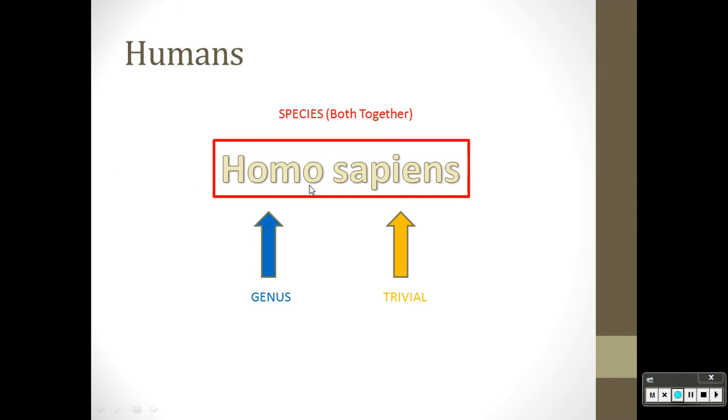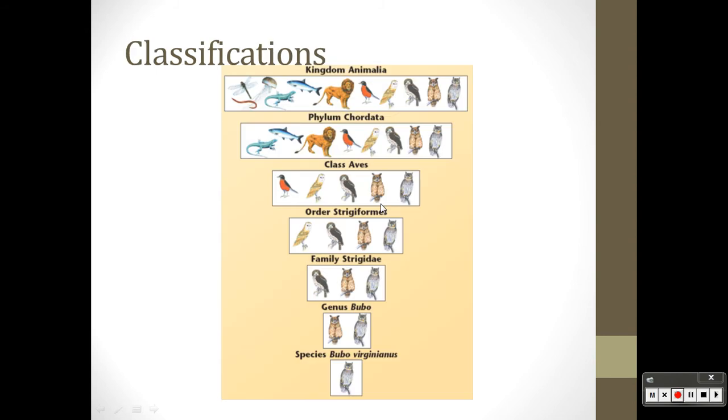Now for how animals are classified, we're going to go into the animal kingdom. Your kingdom is Animalia, and it goes down into more specific groupings as you go through. So kingdom, inside of a kingdom is a phylum, inside of a phylum is a class, inside of each class are orders, inside of orders are families, inside family is a genus, and then a singled out species.